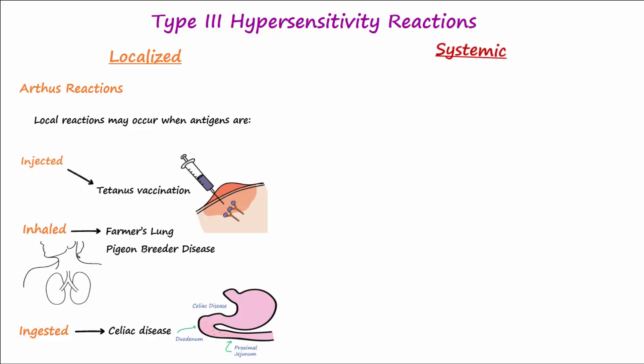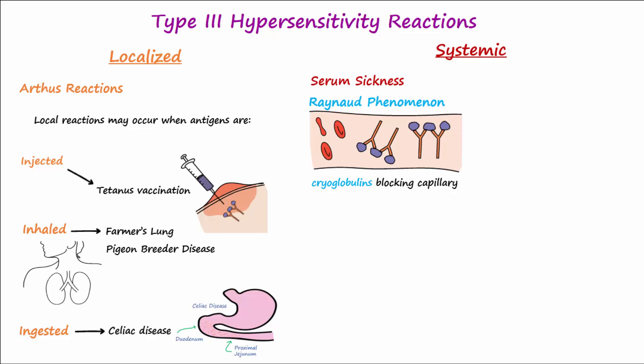Forms of systemic Type 3 hypersensitivity reactions include serum sickness and a certain type of Raynaud phenomenon, where cold temperatures cause immune complexes called cryoglobulins to precipitate in circulation and block blood flow in tiny capillaries of the nose, toes, and fingers.